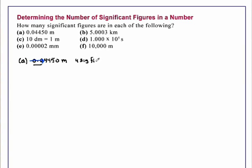Which I'll just abbreviate as sig figs. Another way to look at this is to convert this to scientific notation. We can write this as 4.450 times 10 to the minus 2 meters. There you see the 4 significant figures very clearly.